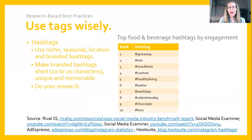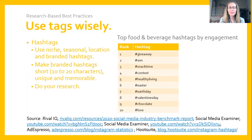The next research-based best practice is using tags wisely. There are three types of tags to highlight, the first being hashtags. A hashtag is a word or phrase preceded with a pound sign, with no spaces between the pound sign and the words. There are four different categories of hashtags: niche, seasonal, location, and branded.